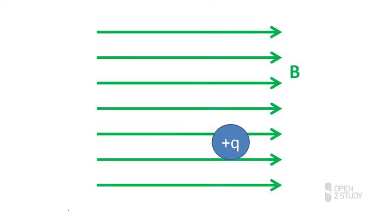But what about the force of a magnetic field on a charged particle? It turns out if you put a charged particle in a magnetic field and it just sits there, there's no force at all. We see here magnetic field lines pointing off to the right with a positive charge sitting there, and again, if it was just sitting there, there'd be no force at all. To get a force on a charged particle, the charged particle has to move in the magnetic field.